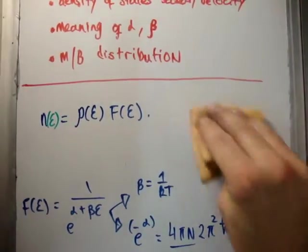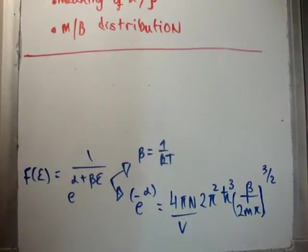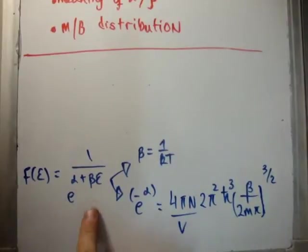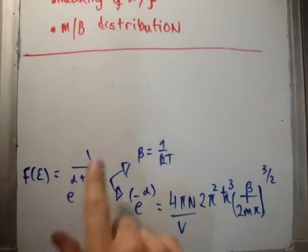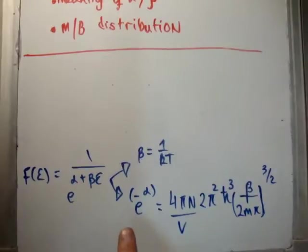Speaking about alpha and beta, we know that the Maxwell-Boltzmann function for classical particles is equal to 1 over e to the alpha plus beta epsilon. I showed that beta for all particles is 1 over kt.